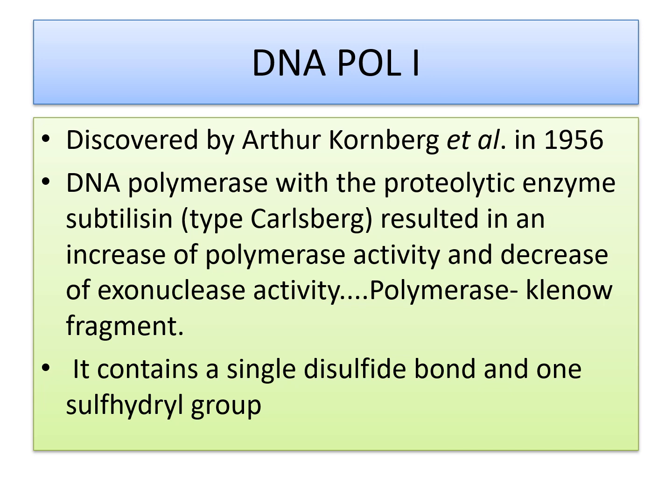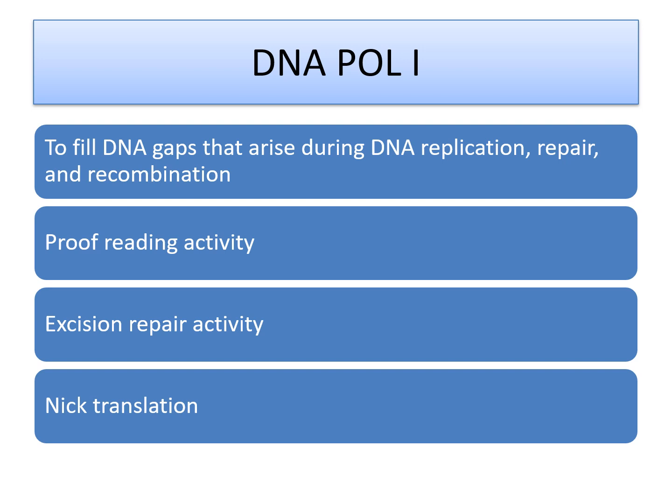They contain a single disulfide bond and one sulfhydryl group. The main function of DNA polymerase 1 is to fill DNA gaps that arise during DNA replication, repair, and recombination. It also performs proofreading activity — otherwise called 3' to 5' exonuclease activity. Apart from that, it also performs excision repair activity, otherwise called 5' to 3' exonuclease activity. And it also carries out nick translation. These are the 4 important functions carried out by DNA polymerase 1.